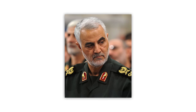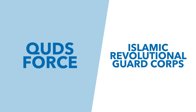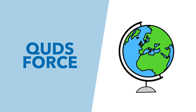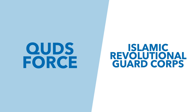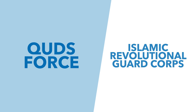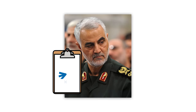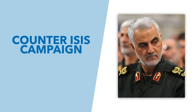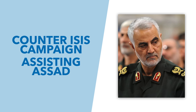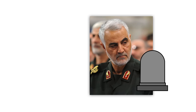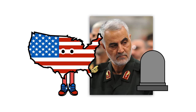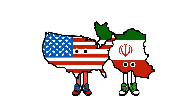Qasem Soleimani was the commander of the Quds Force, a unit of the Islamic Revolutionary Guards Corps. This unit is the overseas or foreign expeditionary arm of the IRGC and is a very significant part of Iran's military. In his role, Soleimani led Iran's campaign across the Middle East, including a counter-ISIS campaign as well as assisting Assad in the Syrian civil war. By killing Soleimani, the US has made major waves in the Middle East, shaping the US-Iranian relationship and potentially changing Iran's plans in the region.